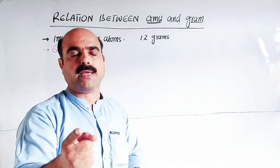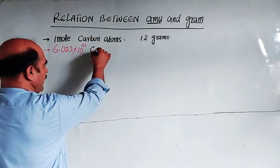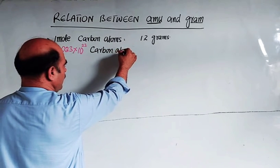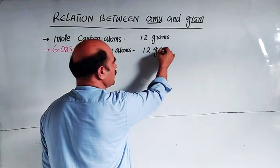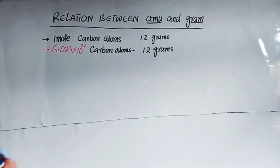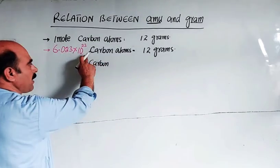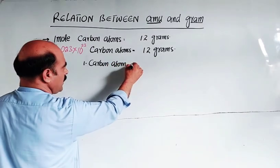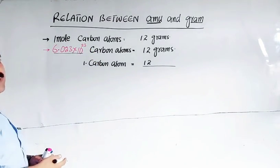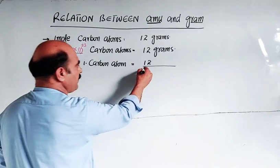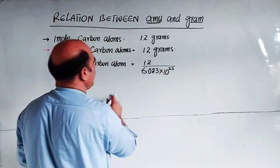Now, 6.023 × 10^23 carbon atoms have a mass of 12 grams. So one carbon atom mass will be - we divide the total mass by the number of carbon atoms. That is 12 divided by 6.023 × 10^23. This will give us the mass in grams.